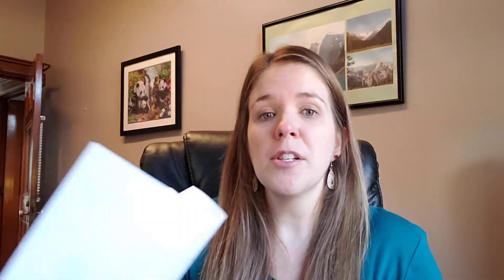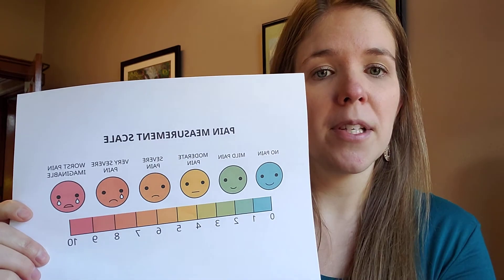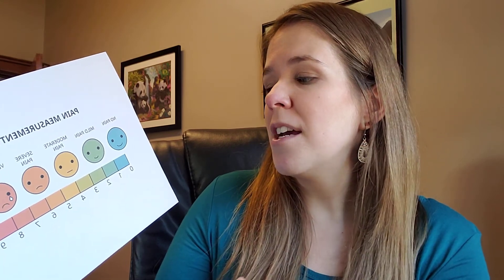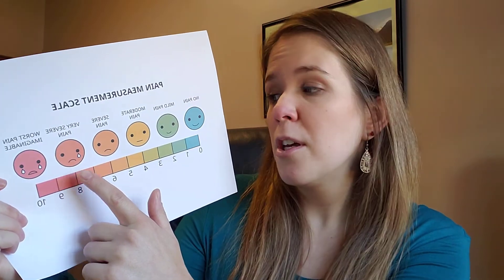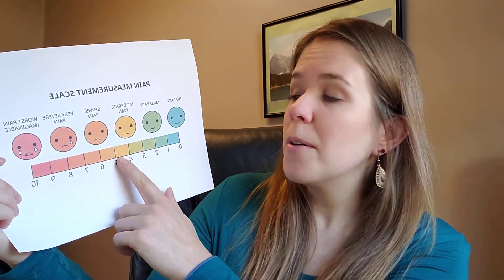Next, identify when the pain happens — does it happen when you sit down, when you're standing, when you're walking, or all the time? These are things the doctor is going to want to know. Next, how would you rate the pain? We provided a pain measurement scale that goes from 0 to 10. I actually used this pain scale when I had my kids — it was really helpful to figure out the amount of pain I was in. Being able to see the faces on the scale can help us gauge how much pain we're in, going from no pain to mild pain to moderate pain.